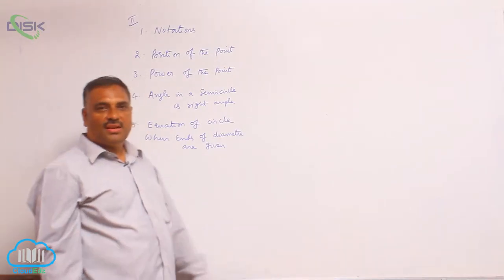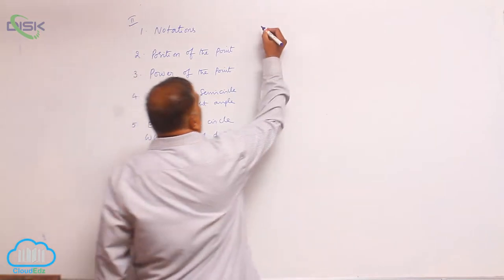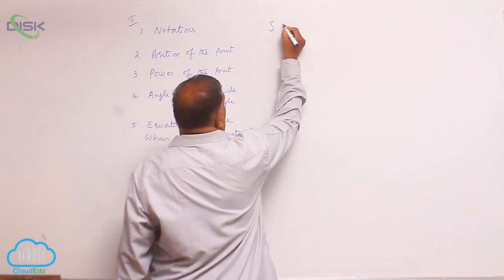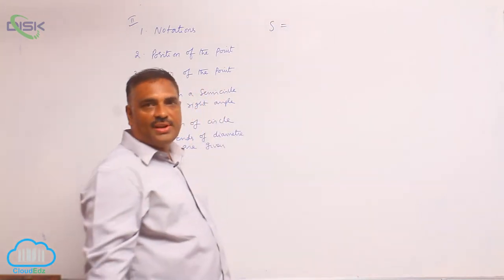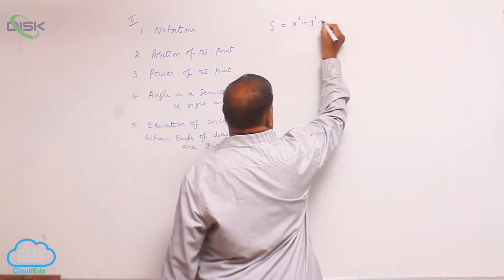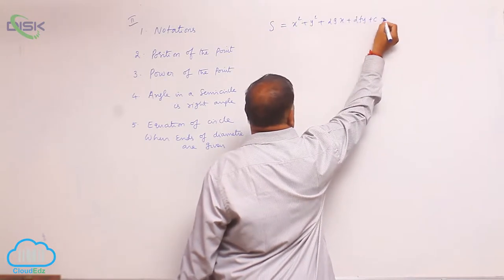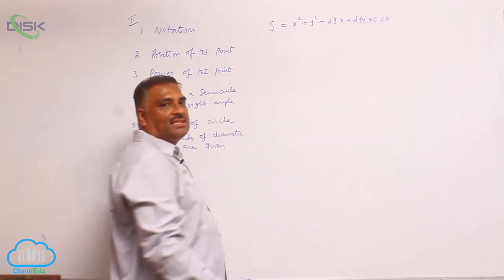Let us concentrate on the second conceptual point: notations. From here onwards, we denote the general equation of circle x² + y² + 2gx + 2fy + c = 0 as S = 0.